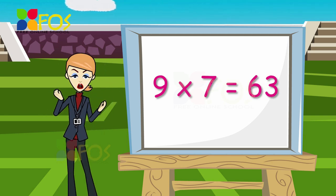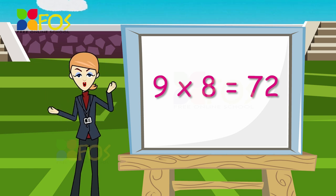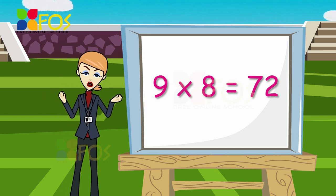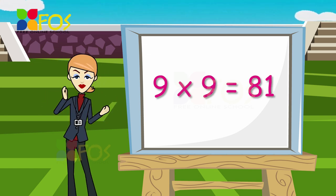Nine sevens are sixty-three. Nine eights are seventy-two. Nine nines are eighty-one.